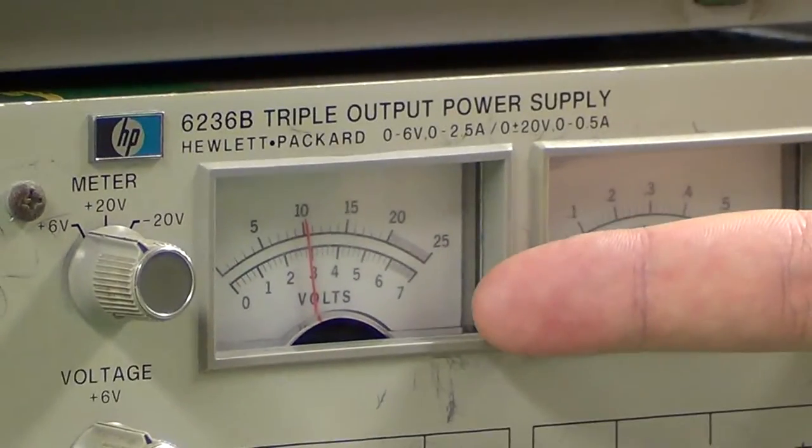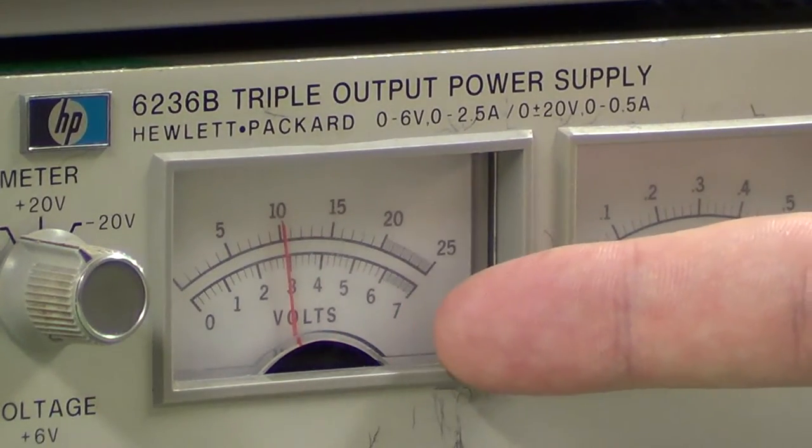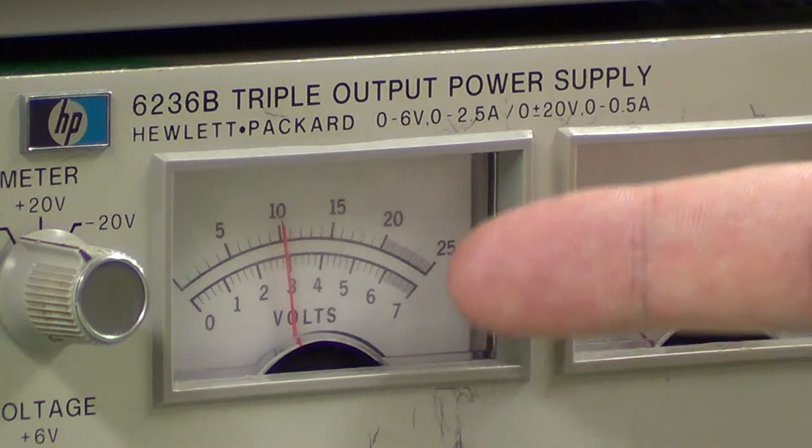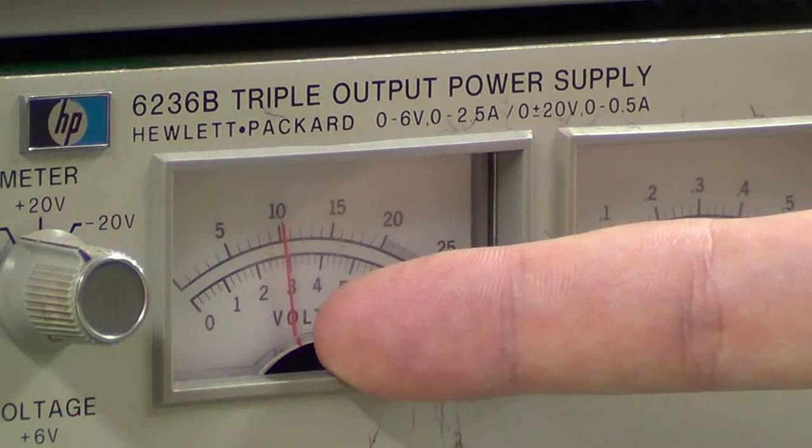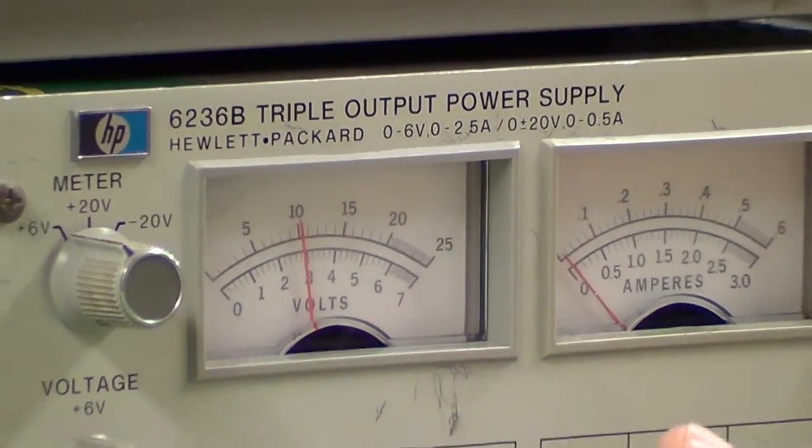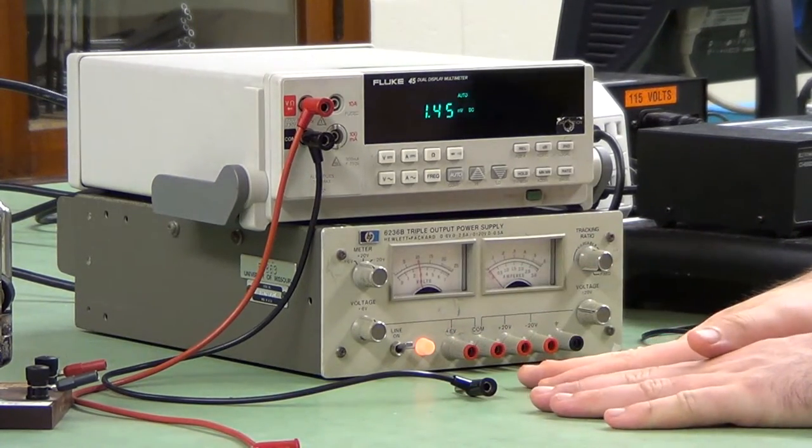There's two scales that you can use on here. There's a lower scale, which goes from 0 to 7 volts, and a higher scale, which goes from 0 to 25 volts. When we're doing this experiment, we're going to use the scale that goes from 0 to 7, so the lower scale. Once you make sure that it's set below 5 volts, you can go ahead and plug in your wires.